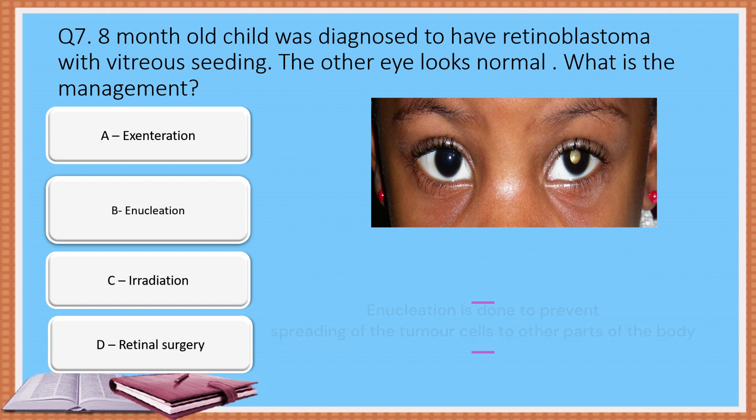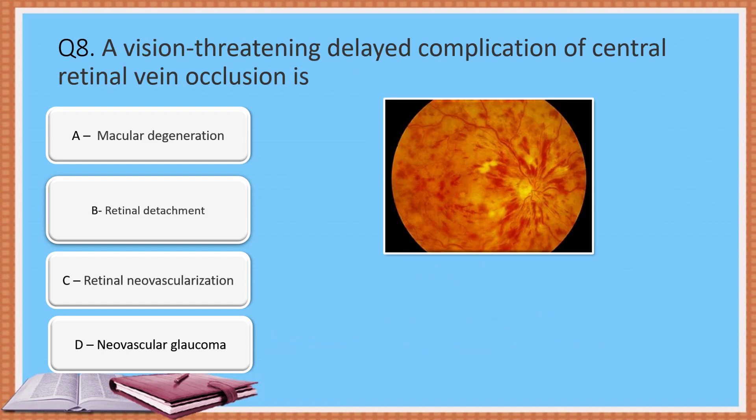Question 8: A vision-threatening delayed complication of central retinal vein occlusion is — Option A: Macular degeneration. Option B: Retinal detachment. Option C: Retinal neovascularization.